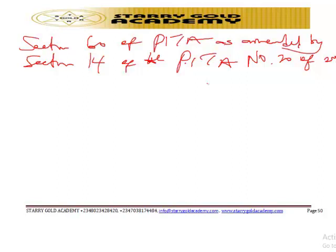Where in the course of its adjudication the Tribunal discovers evidence of possible criminality, the Tribunal shall be obliged to pass such information to the appropriate criminal prosecuting authorities, such as the Office of the Attorney General of the Federation or of any State, or any other relevant law enforcement agencies such as the EFCC.